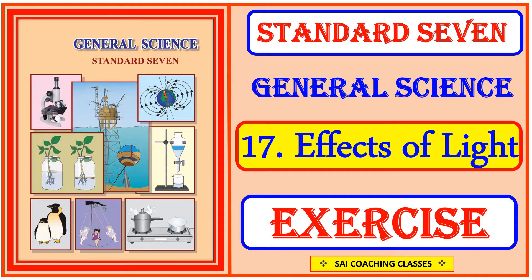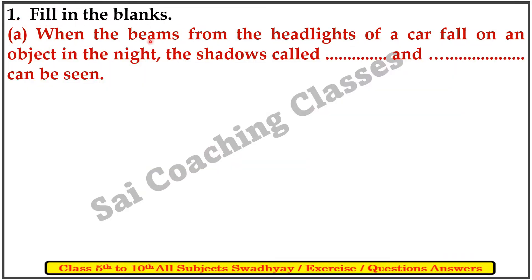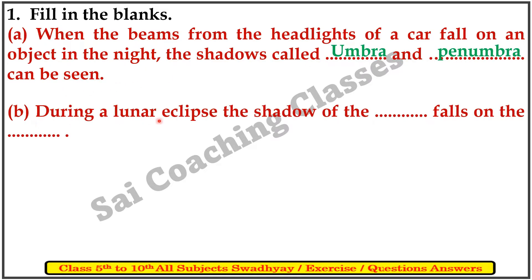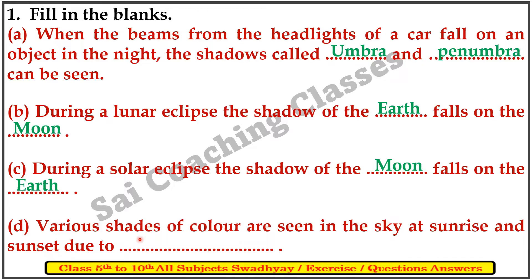This exercise covers the first question: Fill in the blanks. A. When the beam from the headlights of a car falls on objects at night, the shadows called umbra and penumbra can be seen. B. During a lunar eclipse, the shadow of the earth falls on the moon. Answer: Earth and Moon. C. During a solar eclipse, the shadow of the moon falls on the earth. D. Various shades of color are seen in the sky at sunrise and sunset due to scattering of light.